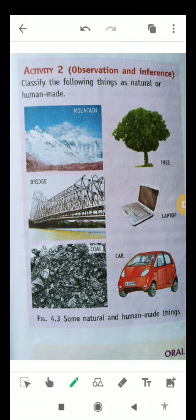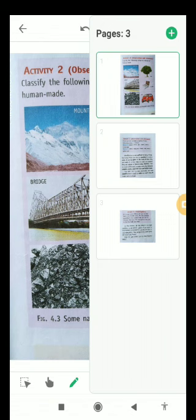Trees are natural things, or living things. Bridges are man-made things, as we all know. Laptops are also man-made things. Coal is a natural thing. Cars are man-made things. So these are classifications of some natural and human-made things.